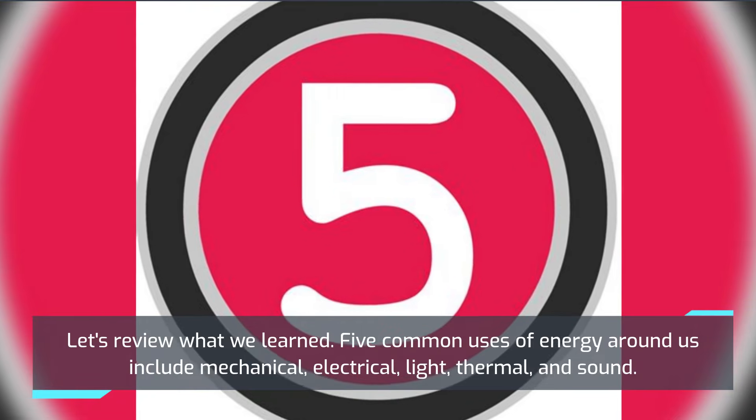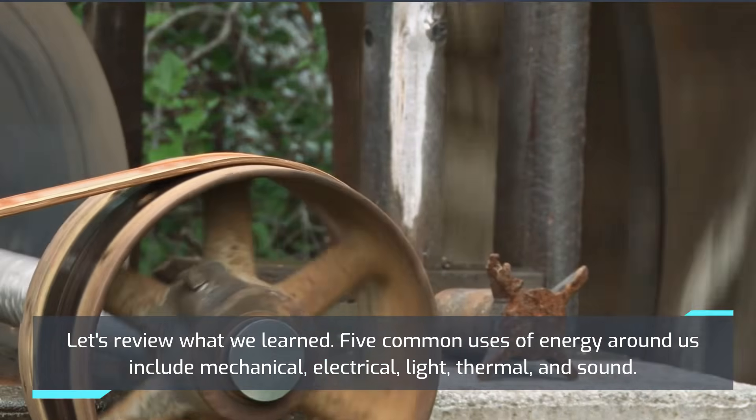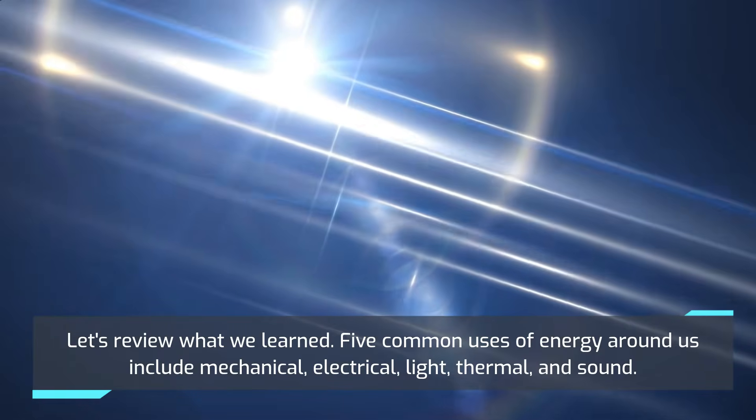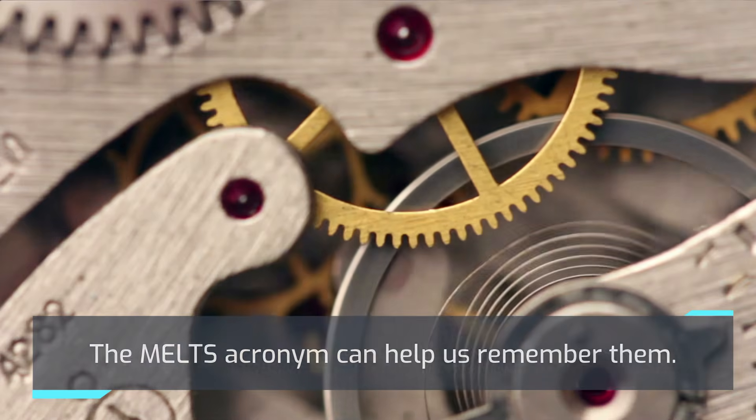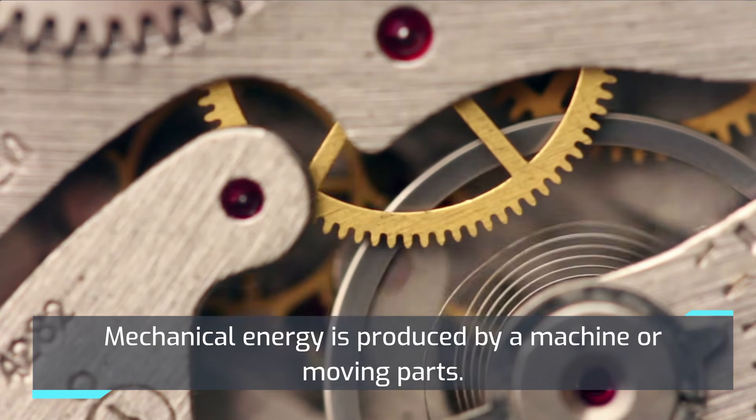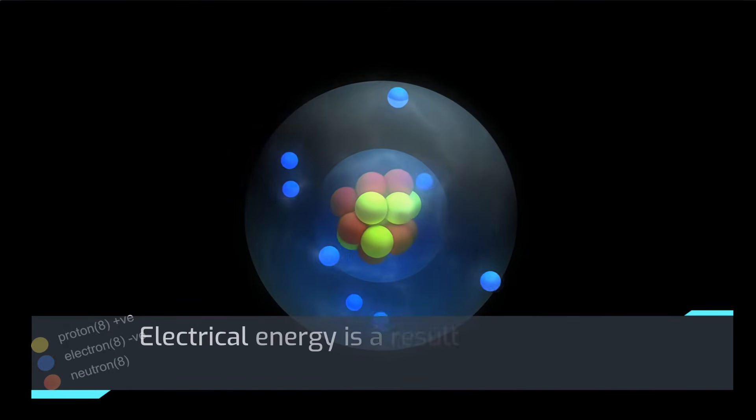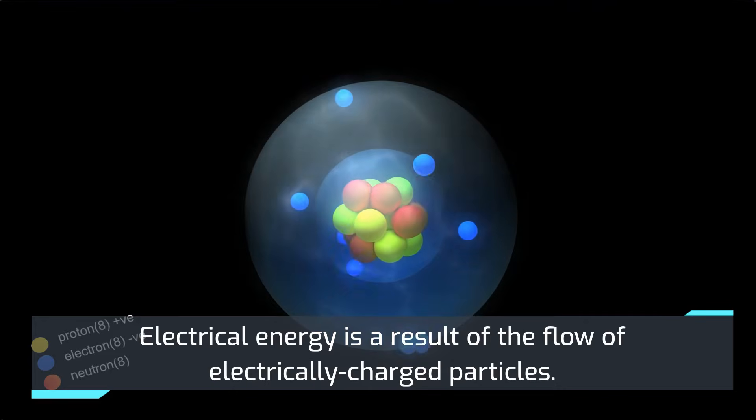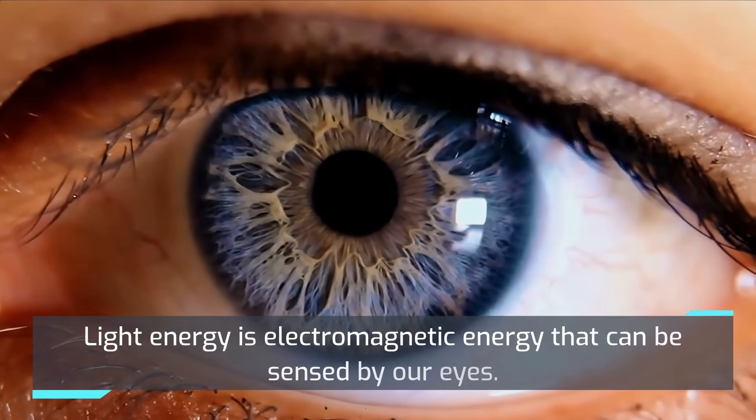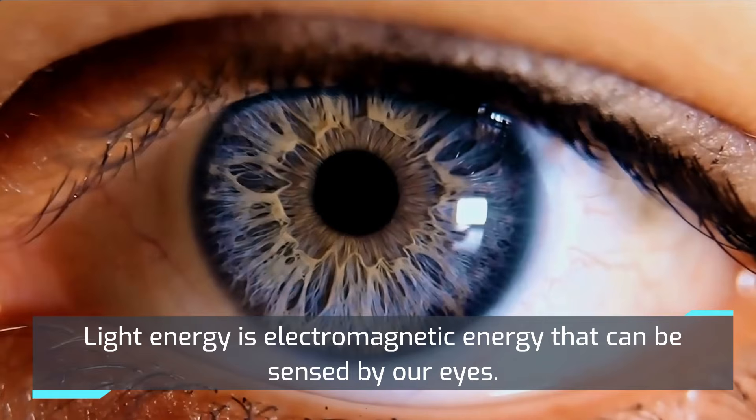Let's review what we learned. Five common uses of energy around us include mechanical, electrical, light, thermal, and sound. The MELTS acronym can help us remember them. Mechanical energy is produced by a machine or moving parts. Electrical energy is a result of the flow of electrically charged particles. Light energy is electromagnetic energy that can be sensed by our eyes.